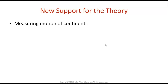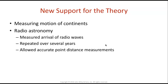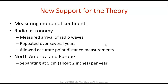Today we have new support for the theory where we can actually measure the motions of continents. That breakthrough comes from radio astronomy, where we're able to measure the arrival of radio waves. You send out a radio wave, measure how long it takes to reach its destination, do this enough over several years, and this allows for accurate point-distance measurements. What we found is that North America and Europe are separating at five centimeters — about two inches — per year. Think about how much energy it takes to move the entirety of North America and Europe away from each other at two inches per year.